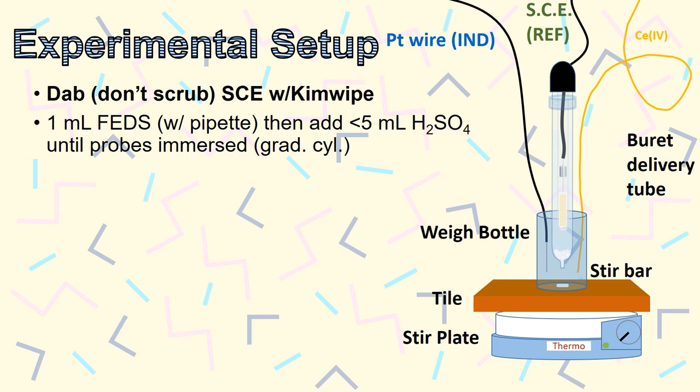Next, you'll add 1 milliliter of the Fe(II) solution. Then, add sulfuric acid solution such that the electrode is immersed in liquid. Now, you can turn on the stir plate, but don't forget to open the vent.